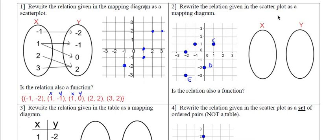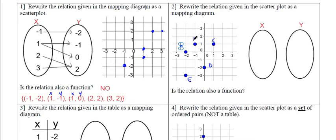Let's look at the second and final question for this video. Question two: rewrite the relation given in the scatter plot as a mapping diagram. I labeled the points so that you can identify what I'm talking about. So we're going to write down all the points — we're going to write down the x values and the y values of each coordinate.